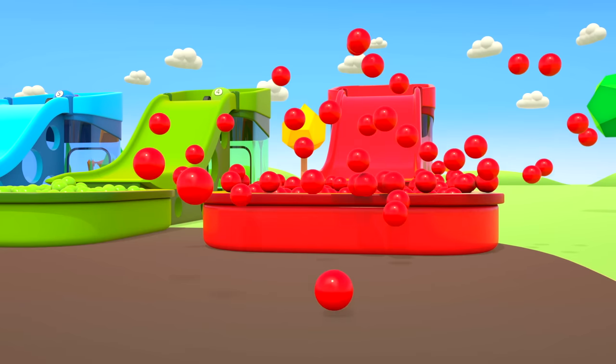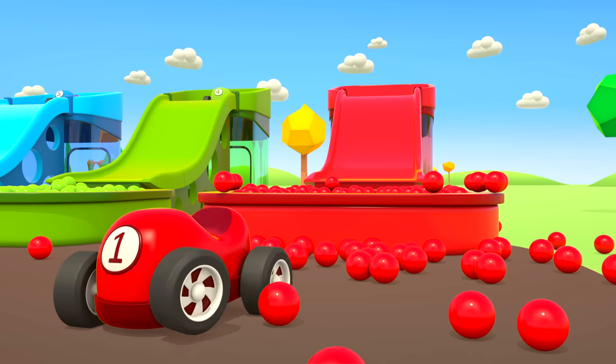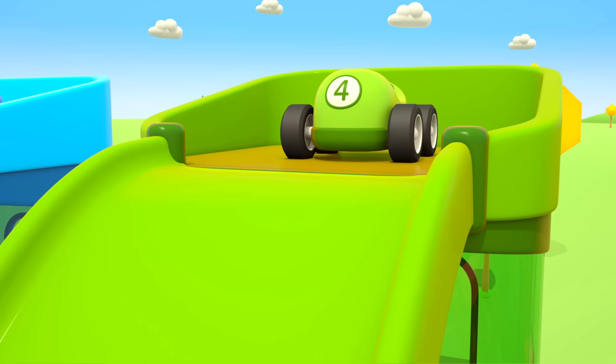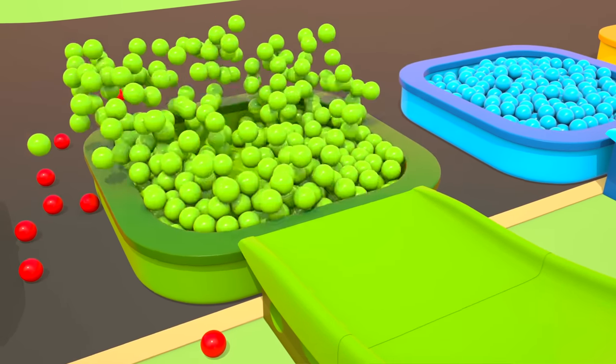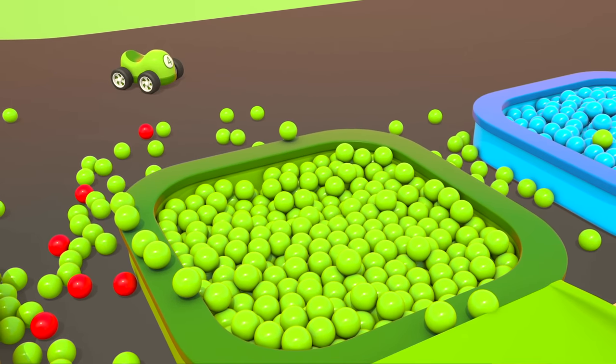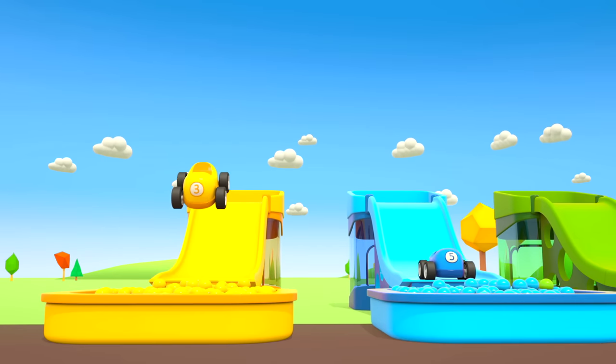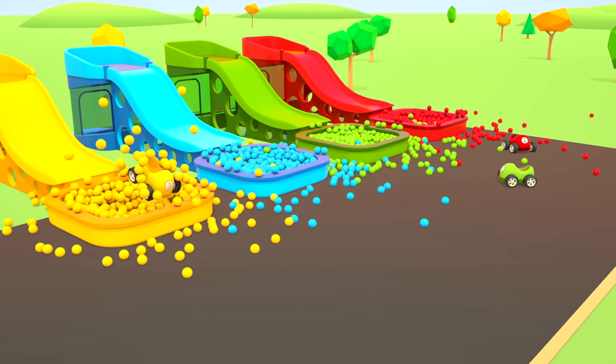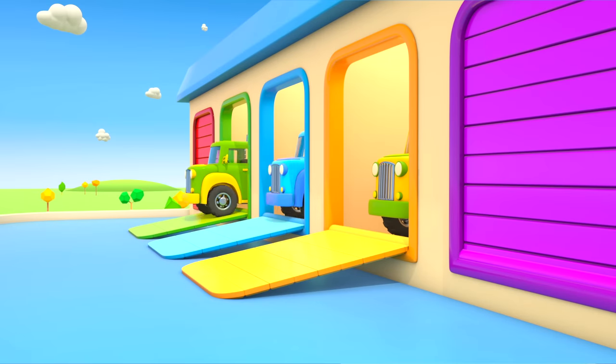Four cars are ready to ride the slide. Go! The red car went into the red pit. The green car went from the green slide. Go! The yellow and blue cars also went down the slide. It's fun to play together. Thanks, helper cars.